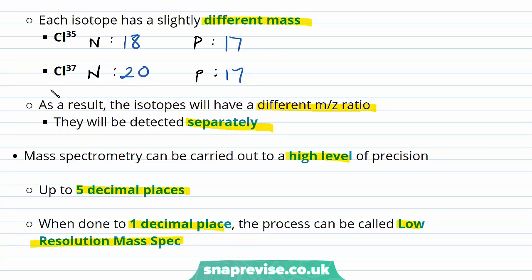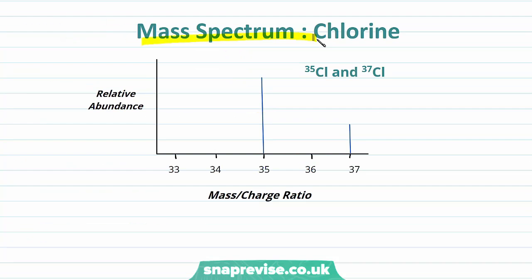And as we've discussed the isotopes of chlorine, we're going to take a look at the mass spectra of some chlorine now to see how the two different isotopes are displayed and how we can work out the relative atomic mass of chlorine by taking a look at the relative isotopic abundance. Here I've got the mass spectrum of chlorine.